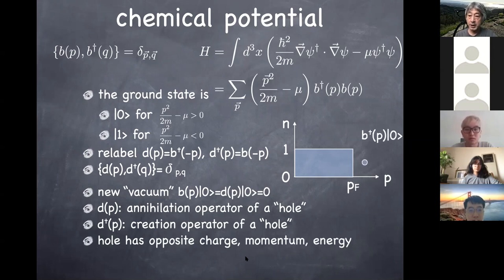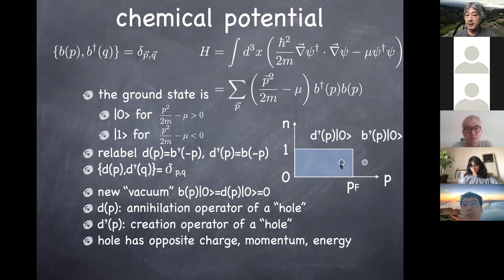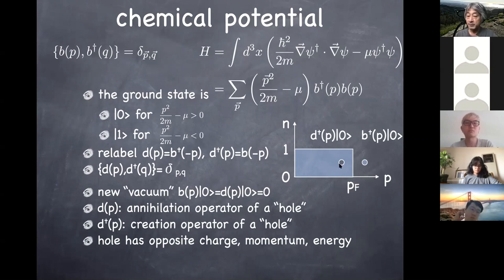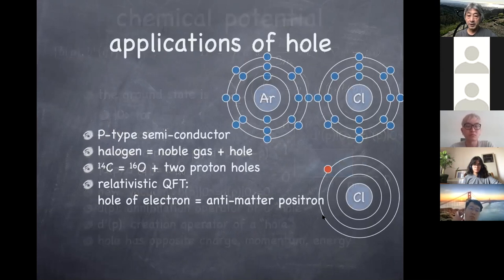The hole turns out to be extremely useful in many different systems. The hole has opposite charge, momentum, and energy. Putting one particle above the Fermi level is the creation of a particle, but removing one particle below the Fermi level is the creation of a hole. Moving a particle up to a higher energy level above the Fermi energy is pair creation of a particle and a hole.